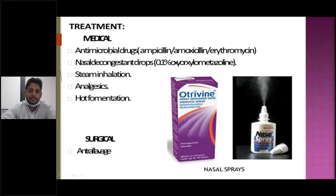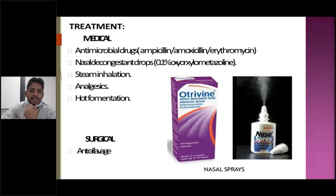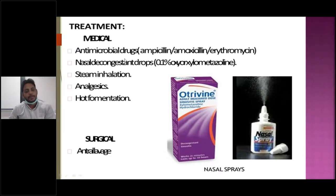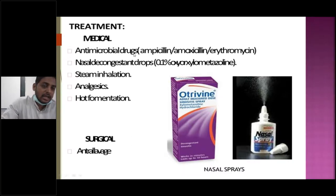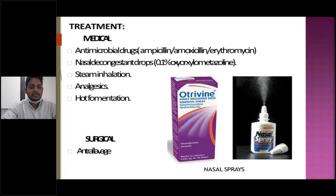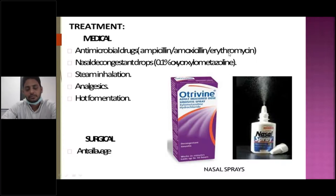Coming to the treatment of acute maxillary sinusitis: antibiotics are usually not indicated if symptoms are less than 10 days duration and less severe, because it is mostly of viral etiology. If symptoms persist more than 10 days, or in immunocompromised patients, or if symptoms are severe at initial presentation, antibiotics should be prescribed. As for which antibiotics: since the bacterial etiology includes Strep pneumoniae, H. influenzae, and Moraxella, drugs like ampicillin, amoxicillin, amoxiclav, and erythromycin act against these organisms. However, ampicillin and amoxicillin have become resistant, so amoxiclav is now preferred — it contains clavulanic acid to act against beta-lactamase-producing organisms. Amoxiclav is the drug of choice.